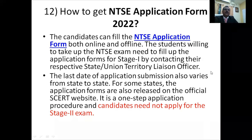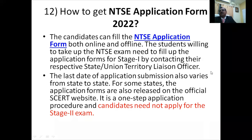Very good question. You can get the NTSE application form by downloading it through the official website, or from the regional office — there you can get it from the liaison officer. Students willing to take the NTSE exam need to fill the application form and apply for Stage 1.